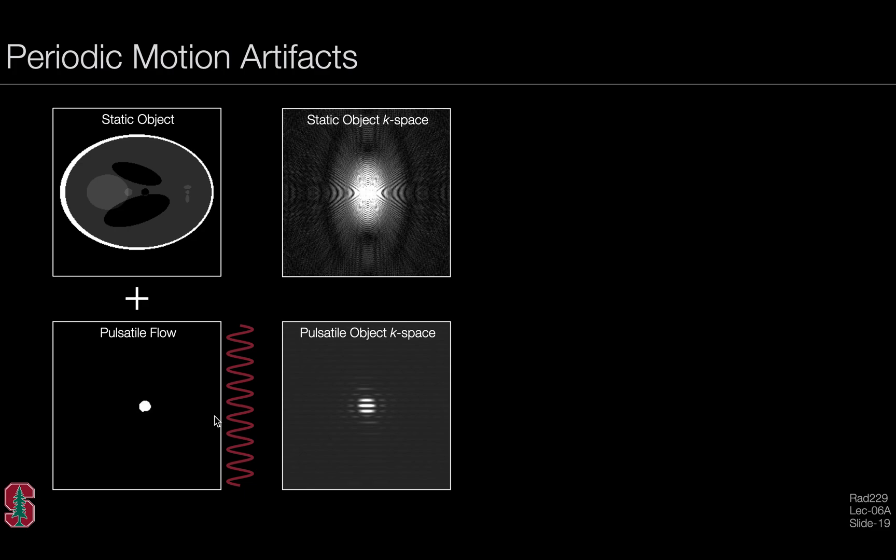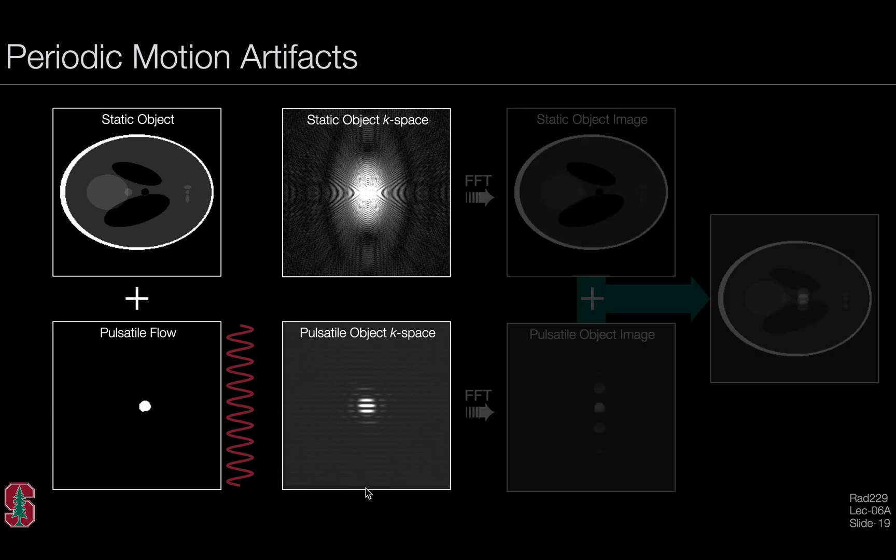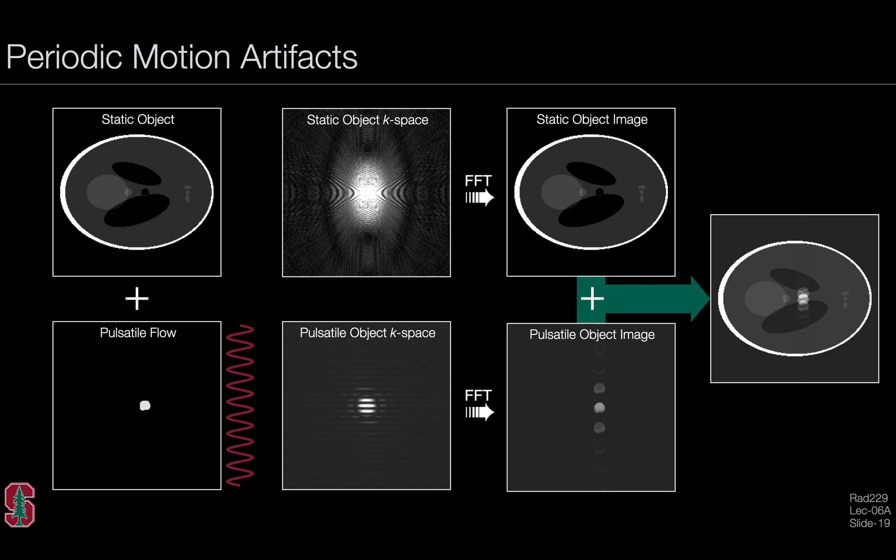If we change the frequency of this object, the frequency of the pulsatile flow artifact, then the frequency of the banding apparent in k-space here will also change in relation to the speed at which we were traversing k-space. If we combine these two images together, we'll get a different pulsatile flow artifact, which will superpose into the static object to produce something that looks a little bit different.